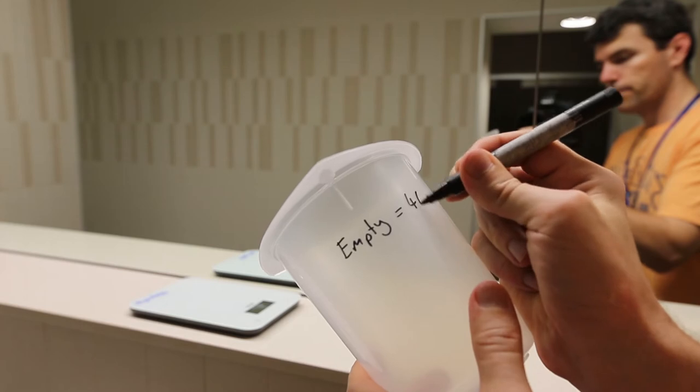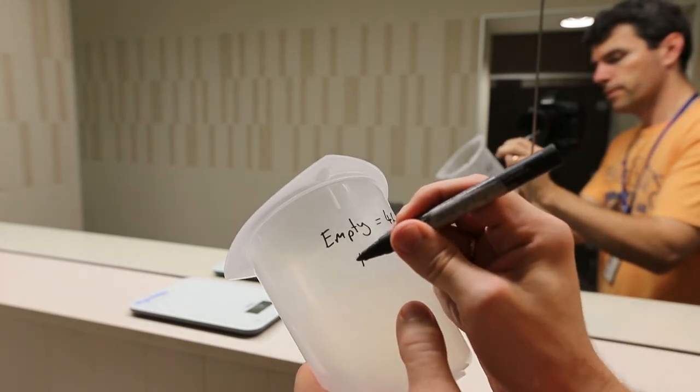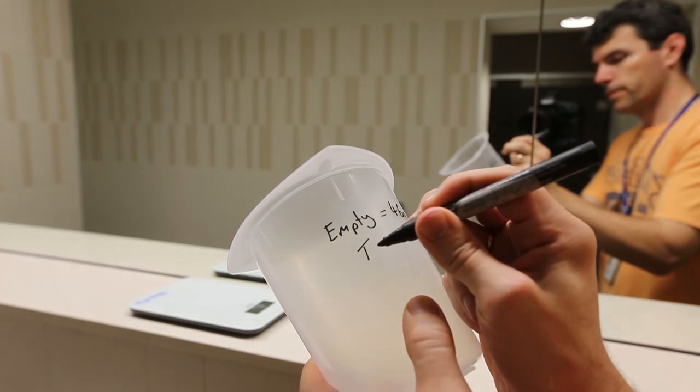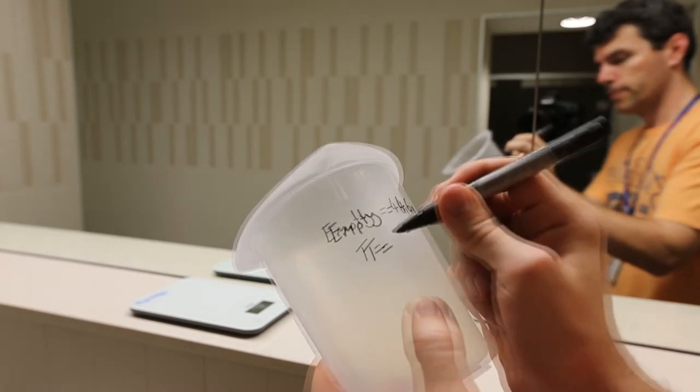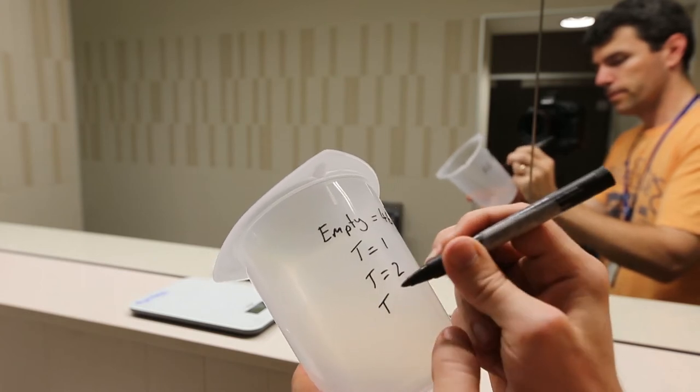You only need to measure the volume of the last three samples that you collect, that is, T equals 1, T equals 2, and T equals 3. You do not need to measure the volume of T equals 0, the initial void volume.